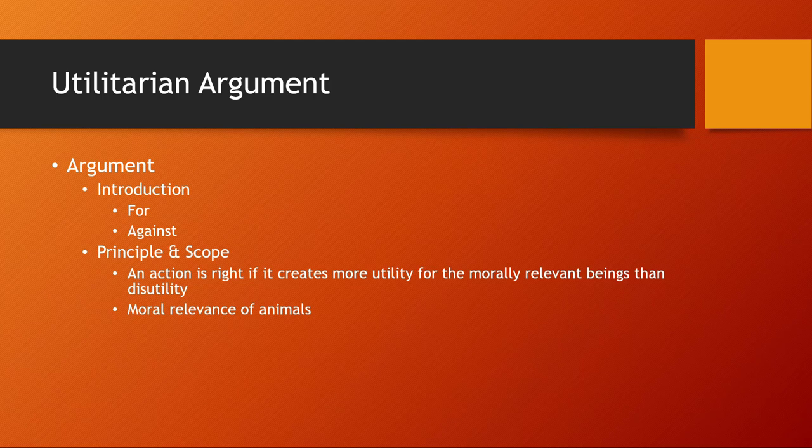Now, for the utilitarian, as we saw back in part two, generically speaking, an action is right if it creates more utility value for the morally relevant beings than disutility — which would be negative value. And so a key part of this debate among utilitarians is the moral status of animals and other creatures. Are animals morally relevant or not?